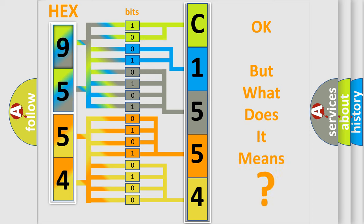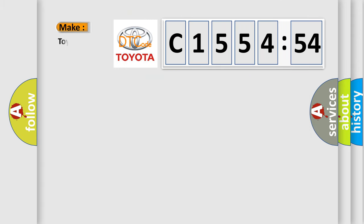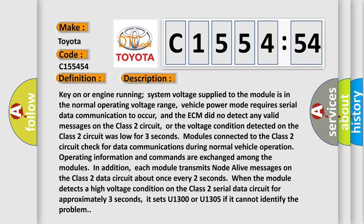The number itself does not make sense to us if we cannot assign information about what it actually expresses. So, what does the diagnostic trouble code C155454 interpret specifically for Toyota car manufacturers? The basic definition is Class 2 data link high or low. And now this is a short description of this DTC code.